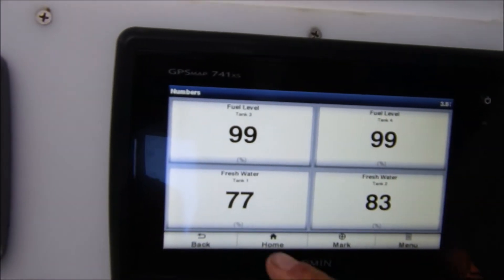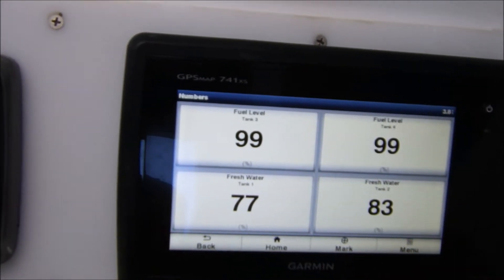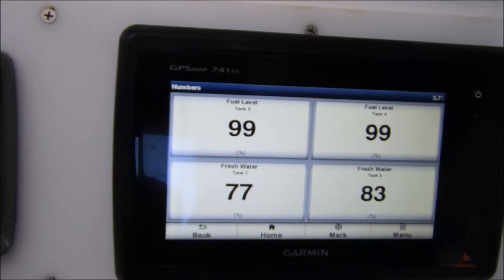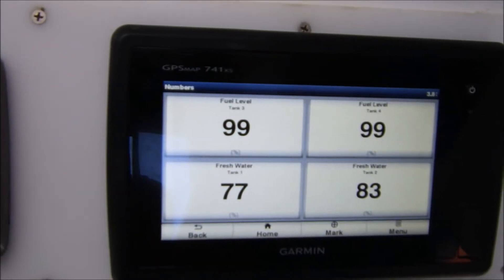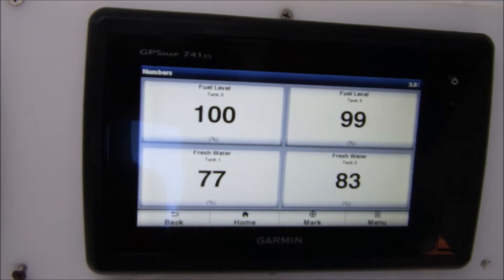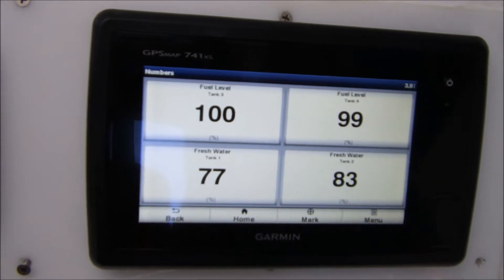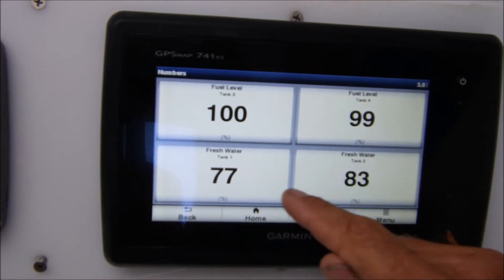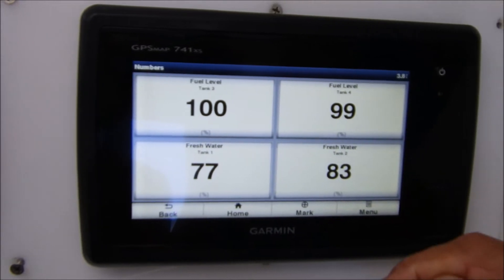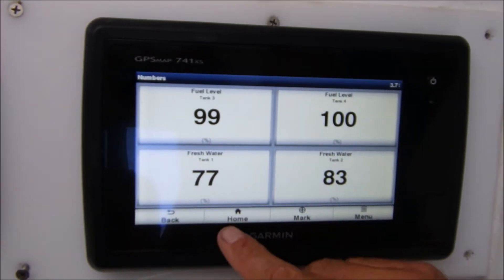So these are the two fuel tanks and these are the water tanks. It's always been a frustration having to go down below and holler back and forth is the water tank full or not and how much do we have in it. So this shows directly on the screen here what the fuel and water tank levels are.